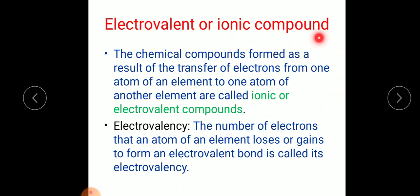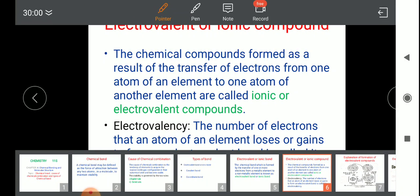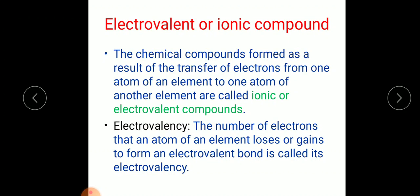The chemical compounds formed as a result of the transfer of electrons from one atom of an element to one atom of another element are called ionic or electrovalent compounds. There is also a term called electrovalency — whatever number of electrons get transferred, either lost or gained, that is the electrovalency. For example, if one electron is transferred, the electrovalency is one.